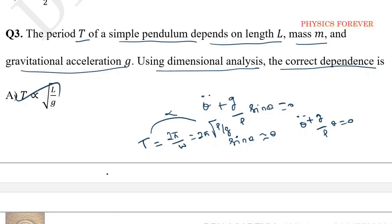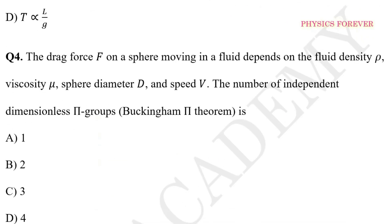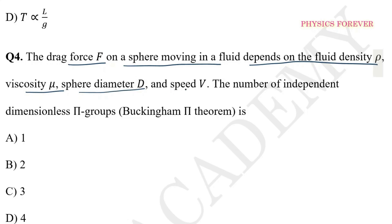For question number 3, option A is correct. For question number 4: The drag force F on a sphere moving in a fluid depends on fluid density rho, viscosity mu, sphere diameter D, and speed V. The number of independent dimensionless pi groups is — the correct option for question number 4, option B is correct.